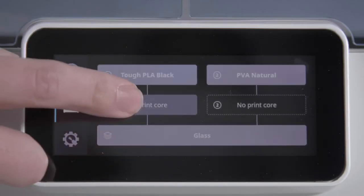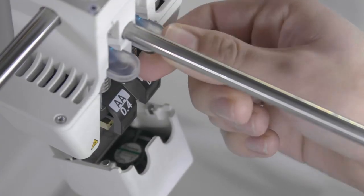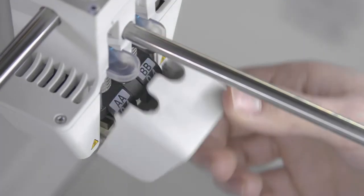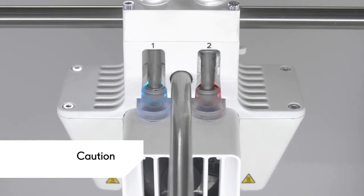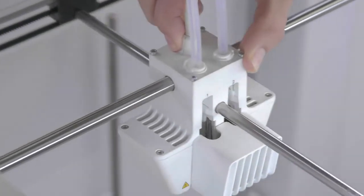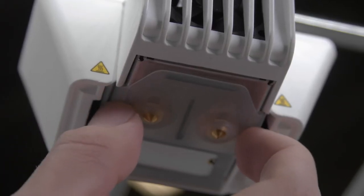Next, align the position of the cover. Go to the configuration menu to load both print cores. Always be sure to wait for both print cores to cool down before proceeding. Position the print head at the front of the printer again. Move the cover left and right to align it with the print cores.